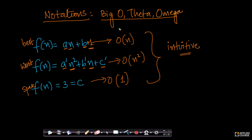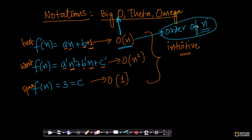This O is also called big O, read as big O of n, or in other words, order of n. There are three notations in the analysis of algorithms: there is big O, there is theta, and there is big omega.